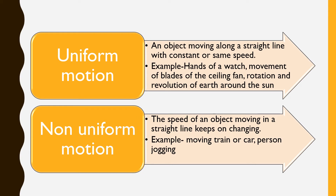Here are two more things to keep in mind. First is uniform motion — an object moving along a straight line with a constant or same speed. You might think there is no car or bus that moves with uniform motion, because they always start slowly, pick up speed, and slow down while stopping. Examples of uniform motion include the hands of a watch, the movement of a ceiling fan blade, and the rotation and revolution of Earth around the sun. They all move with a constant speed.